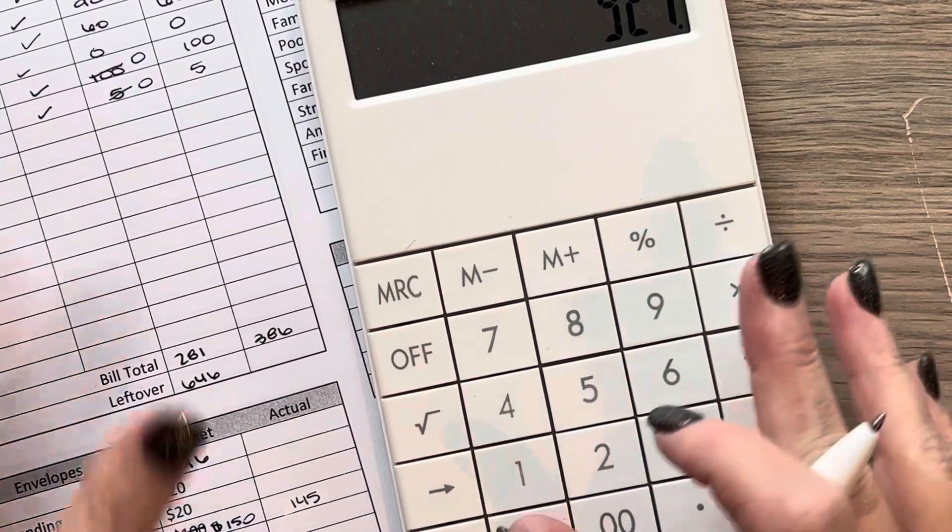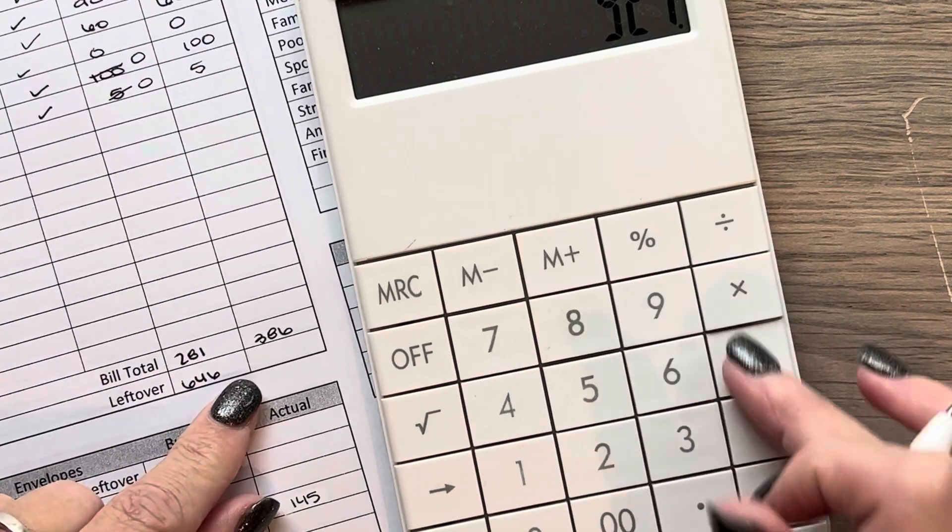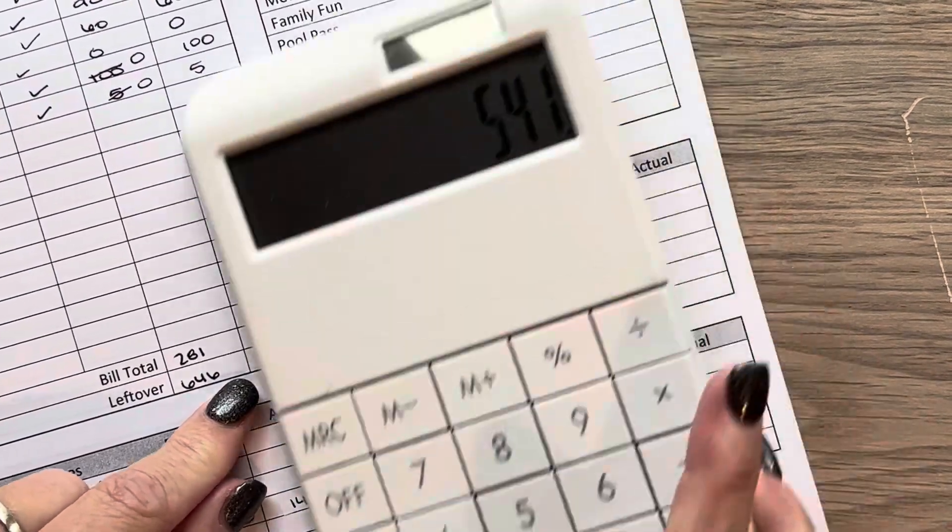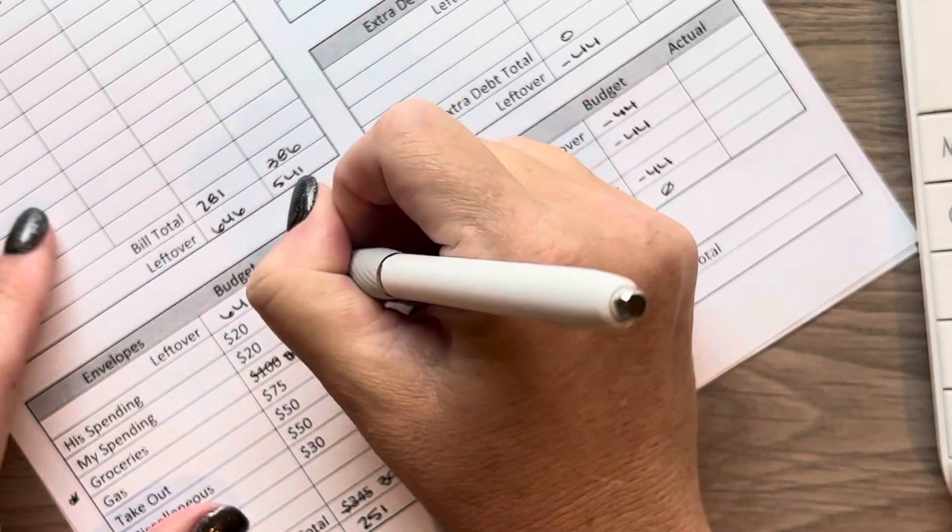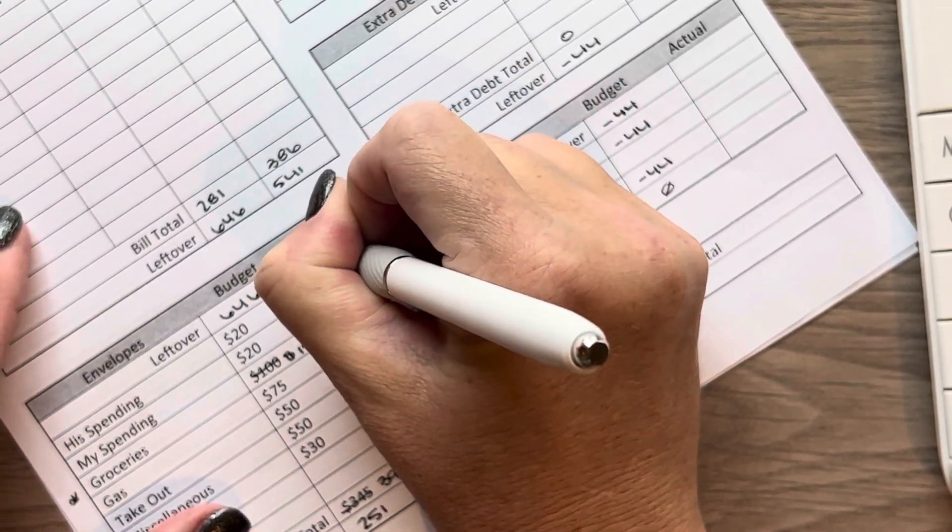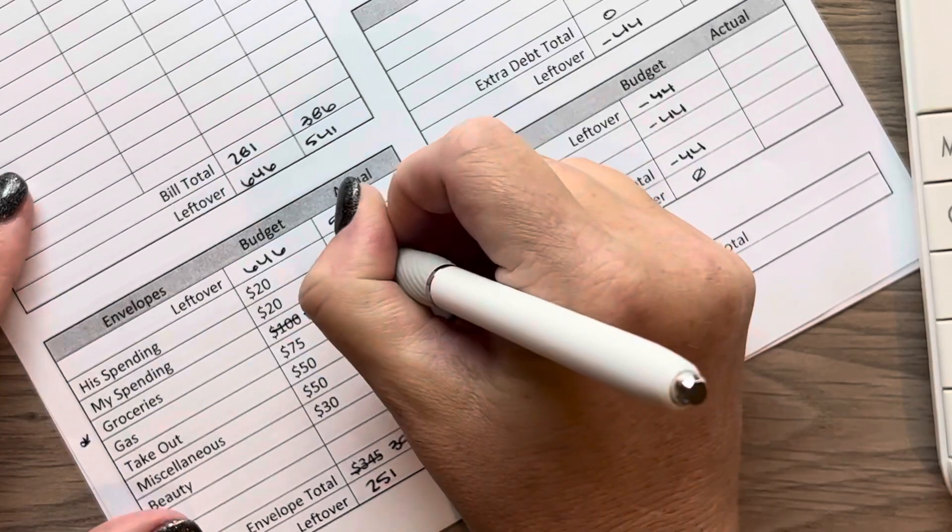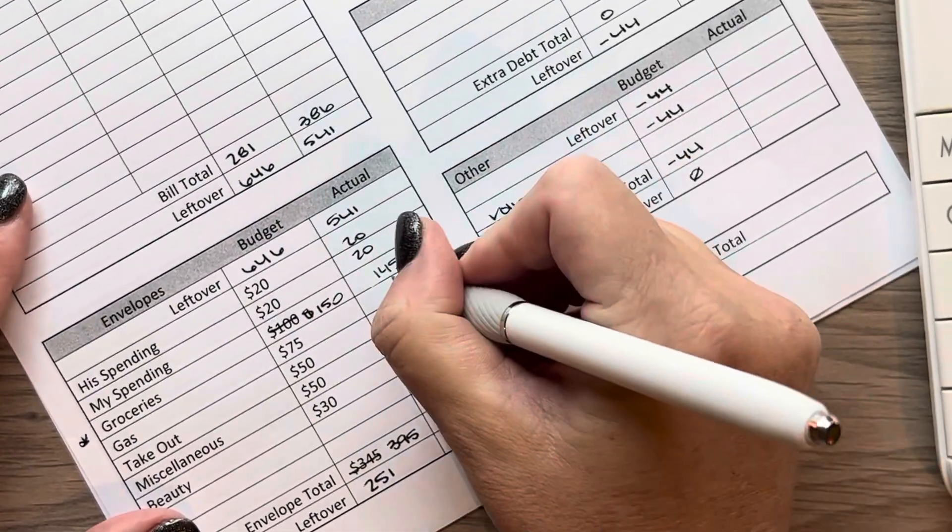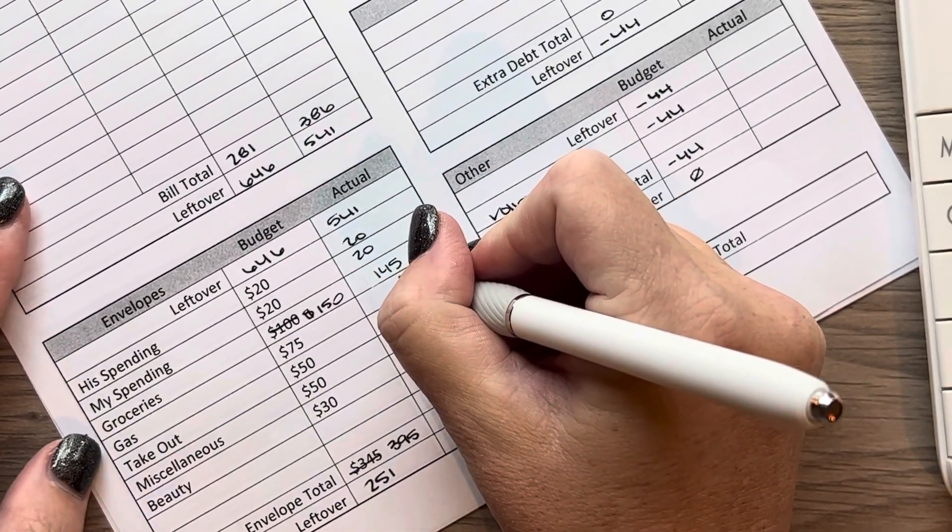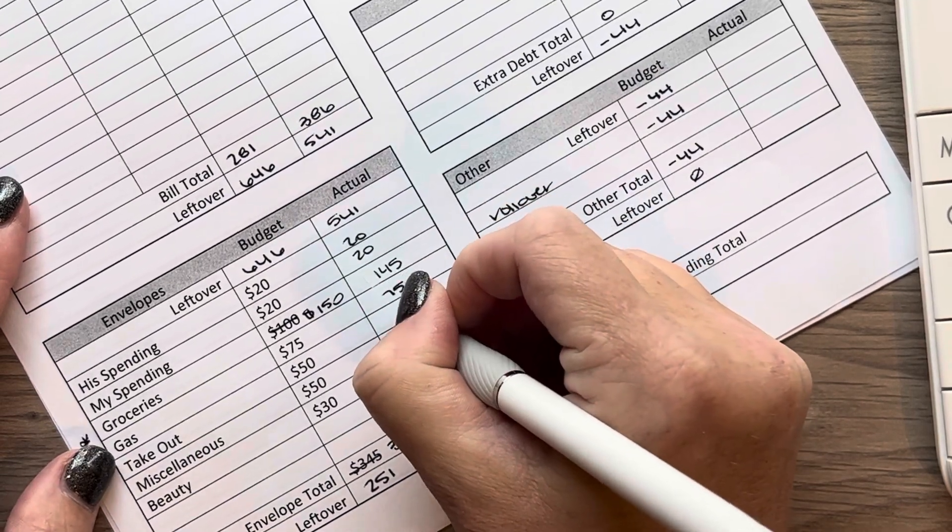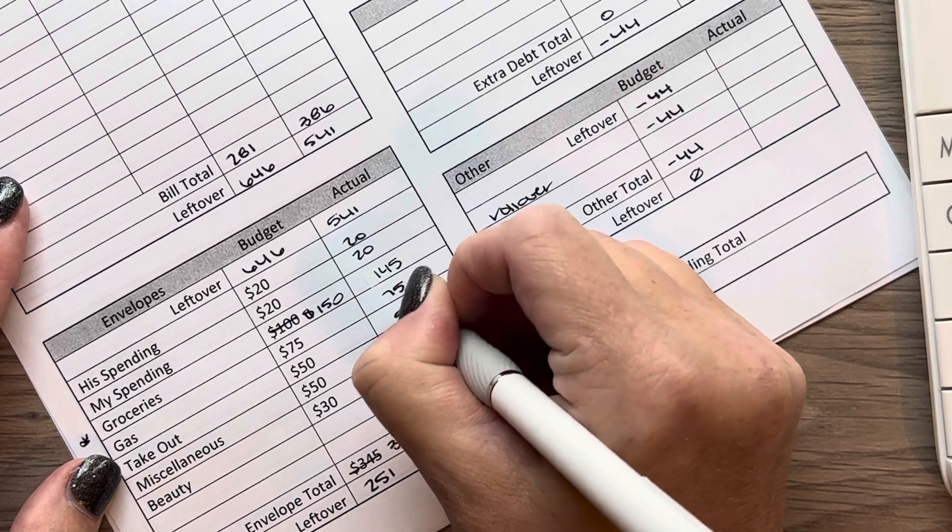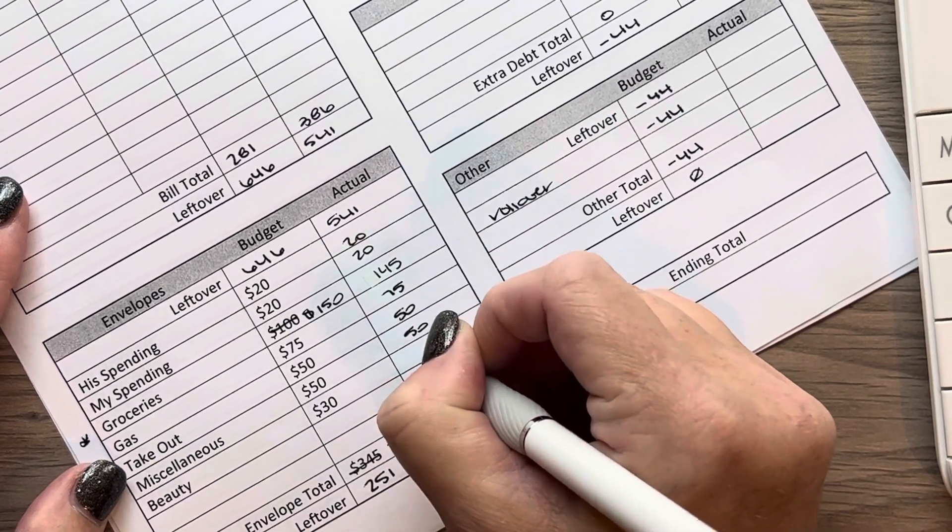So we'll take the $927 minus the $386, which leaves us with $541. His spending was 20, mine was 20. We did actually only spend $145 in groceries and then gas. I did make that $75 payment for that. Takeout was 50. Miscellaneous was 50 and beauty was 30.